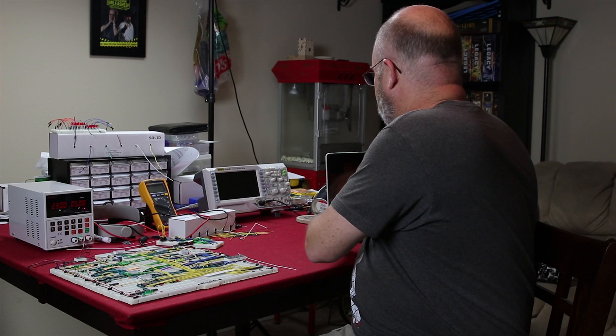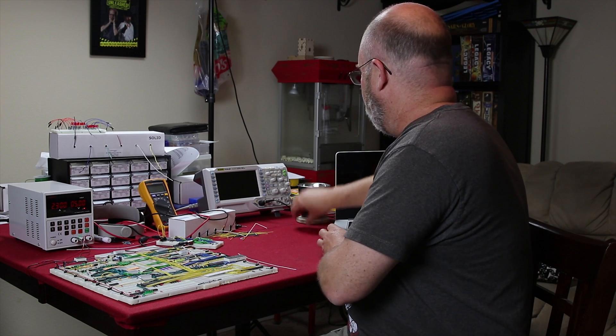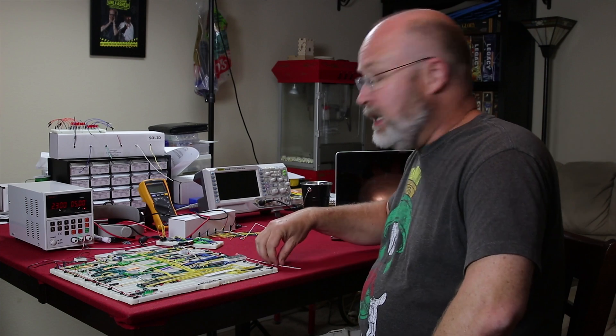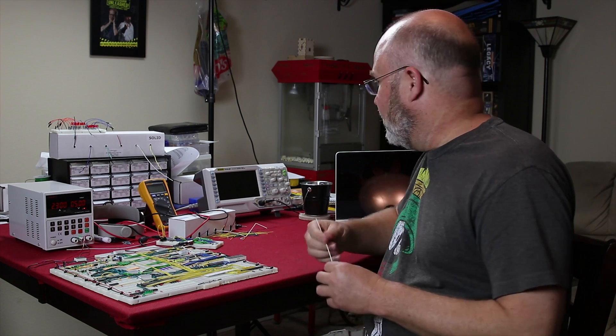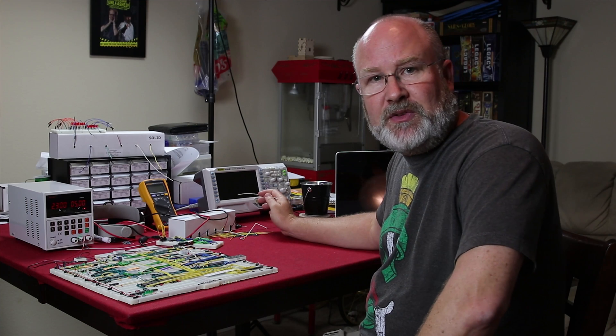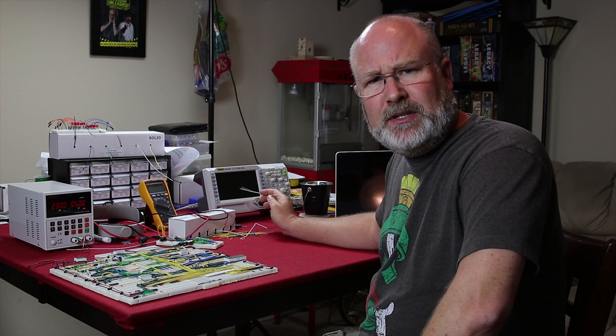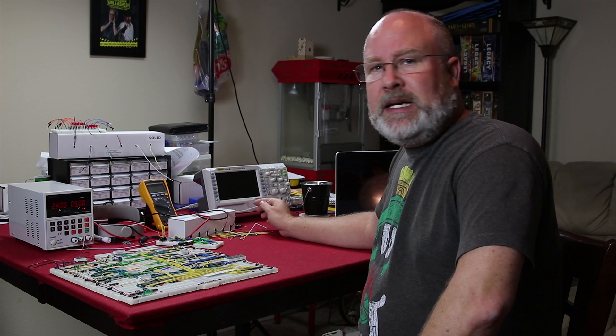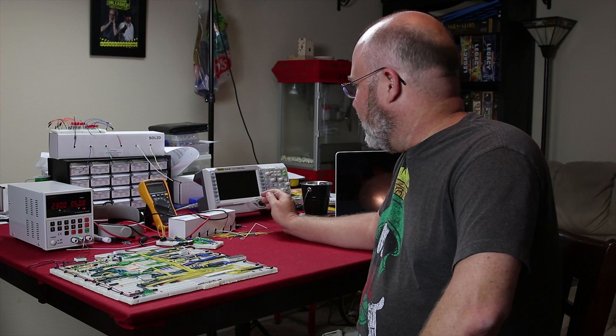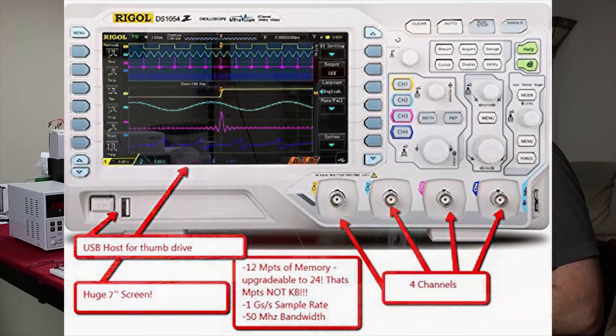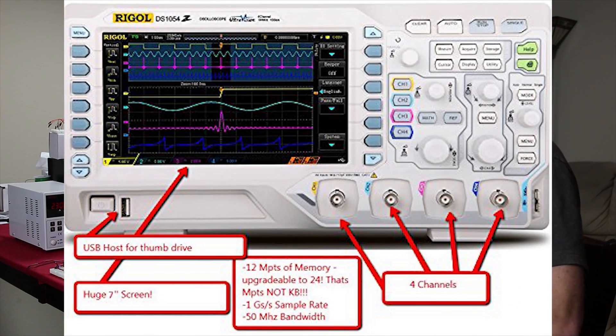A couple of things that I invested in when building this that I didn't have when I started is I invested in this Rigol DS-1054Z. It's about $349, $299 or $399, I forget. Surprisingly affordable and gives you a lot of information. Now, you don't have to have an oscilloscope. This is what this is, an oscilloscope.